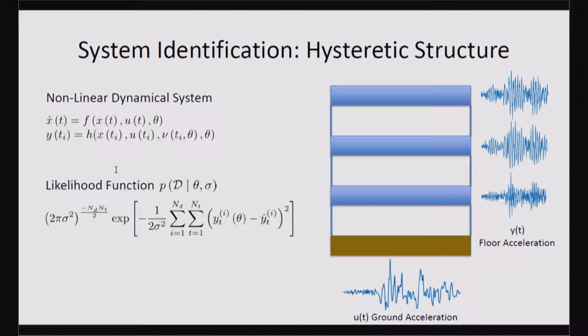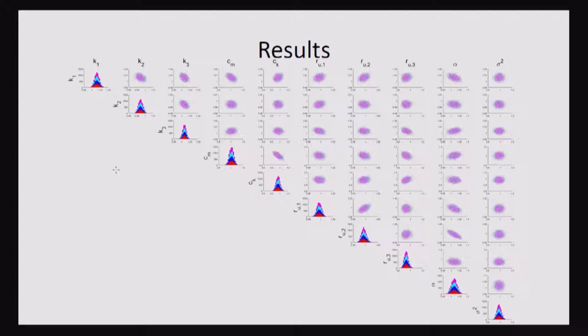And so this is the correlation between many of the parameters that we're estimating. And the important thing to take from this is that the colors represent four different chains that we evolved in parallel, and we can see that they basically get the same distribution. They're all sampling about the same posterior, so we can see that there's no bias.